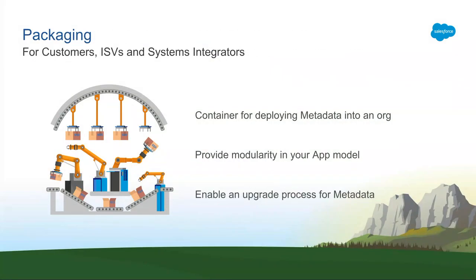Packaging is a container for distributing metadata into an org. It provides modularity to your app model. If you go into your production org and start looking at metadata, you will now be able to see with packages what was the source of the package and how it was introduced into that org. There's also a clear upgrade process. There are versions associated with packages, so now you can understand what were the different versions and what you were trying to introduce as part of each version, providing a very clear upgrade path.